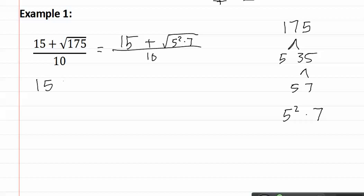This gives us fifteen plus five root seven over ten. We cannot simply just start reducing the fifteen and the ten. We first must factor out anything in common on top, meaning they both have a five in common.